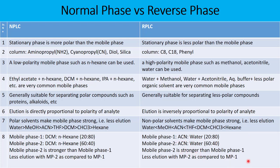By understanding how retention works, you can decide on the suitable chromatography mode — whether normal phase or reverse phase. Most of the time, reverse phase is preferred because of its highly robust behavior and lower cost. Normal phase is not much preferred because it is not robust and the cost of operation is also quite high. Thank you so much.